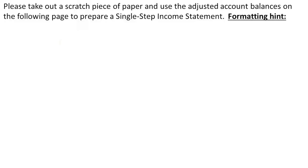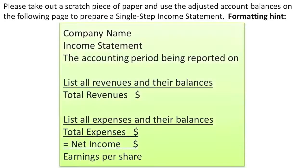Here is a formatting hint. Put the name of the company at the top, specify that it's the income statement, and specify the accounting period being reported on. Normally it's a year, but since this company started March 1st of X1, it will just be from March 1st X1 to December 31st X1. Then list all revenues and their balances and total them up.